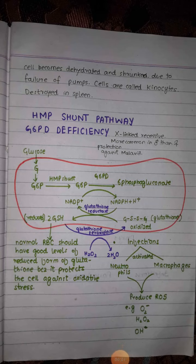In this video we will discuss hemolytic anemia which occurs due to enzyme defects inside the red blood cells. The most important enzyme defect responsible for hemolytic anemia is in the hexose monophosphate shunt pathway, and the deficient enzyme is known as glucose 6-phosphate dehydrogenase. Glucose 6-phosphate dehydrogenase deficiency is an X-linked recessive trait and disease.